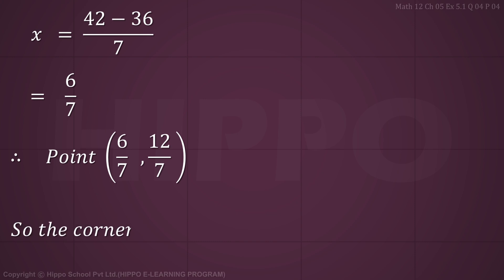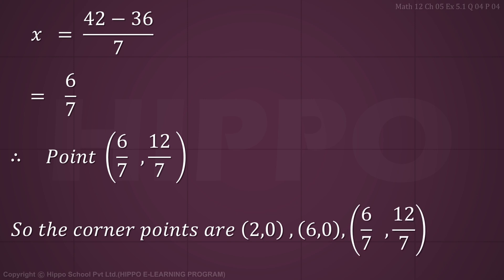So the corner points of the feasible common region are (2, 0), (6, 0), and (6/7, 12/7).